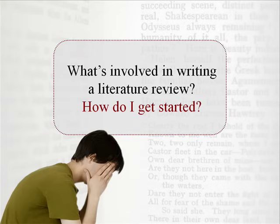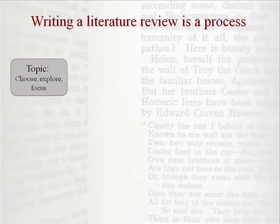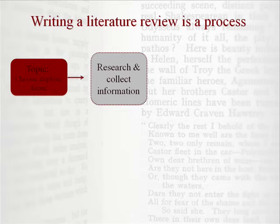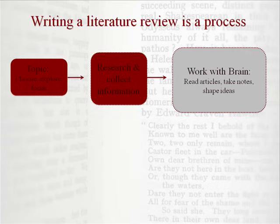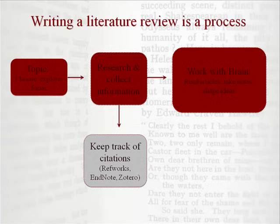So at this point, you may be asking yourself just what's involved in writing a literature review and how do I get started? Writing a literature review is a process with several key steps. Your first step involves choosing, exploring, and focusing your topic. At this stage, you might discover that you need to tweak your topic or the scope of your research as you learn more about it. Then you'll need to do research using article databases, the library catalog, Google Scholar, and other sources to find scholarly information. You'll want to evaluate what you find and select articles, books, and other publications that will be most useful. Then you will need to read through these articles and analyze and critique what you read. You can use citation management software like RefWorks, EndNote, or Zotero to help you stay organized.